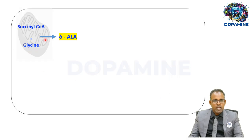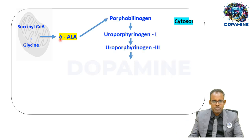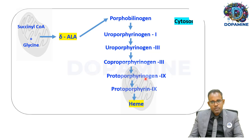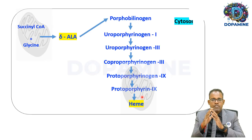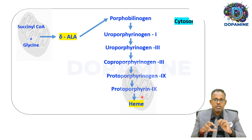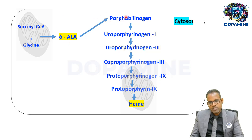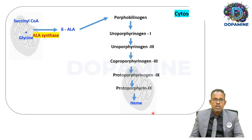ALA undergoes multiple reactions: it is converted to porphobilinogen, which is converted to uroporphyrinogen 1, then uroporphyrinogen 3, then coproporphyrinogen. It then re-enters the mitochondria where it is converted to protoporphyrin 9, which is ultimately converted to heme. Heme synthesis occurs both in the cytoplasm and in the mitochondria — the first step and the last two steps occur in mitochondria, and the remaining steps occur in the cytoplasm.